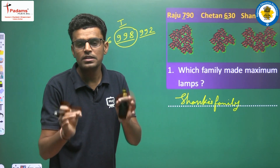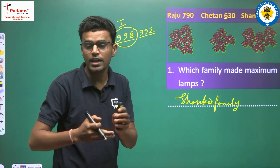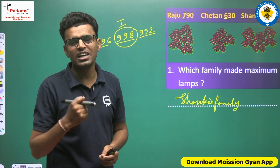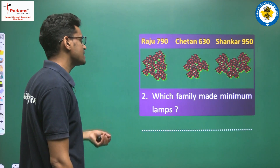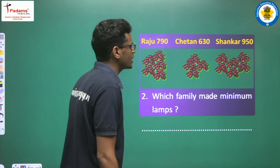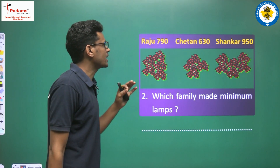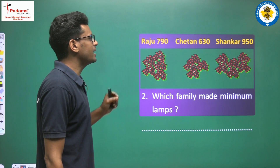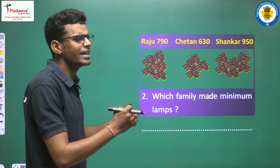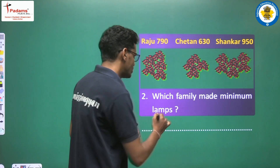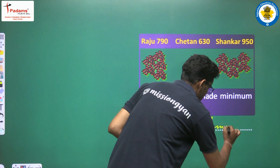The comparison rule: count digits first, then start comparing from the heavier (higher) place value, then move to another place, keep checking until the bigger number is found. The next question is: which family made the minimum lamps? Minimum means the lowest value. Raju's family creates 790, Chetan's family creates 630, and Sankar's family creates 950. The lowest is 630, so Chetan's family made minimum lamps.